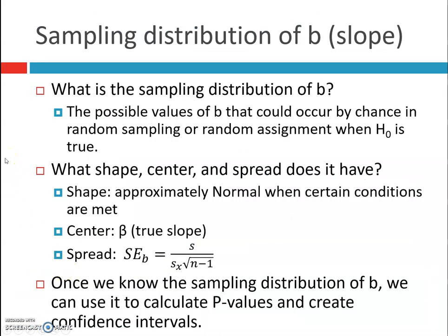The sampling distribution of b is the possible values of b that could occur by chance in random sampling or random assignment when your null is true. The shape is going to be approximately normal, as long as certain conditions are met. The center is going to be β, which is the true slope. And then our formula for spread, my standard error, is this guy right here, which is on your formula sheet. Once we know the sampling distribution of b, we can use it to calculate p-values and also to create confidence intervals.